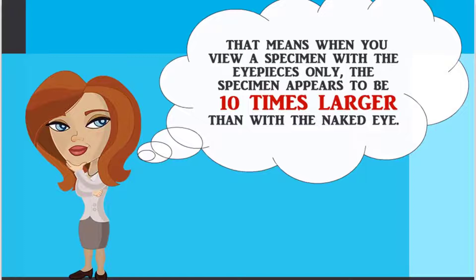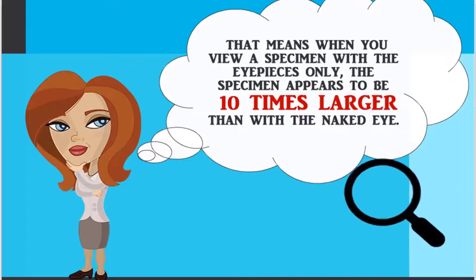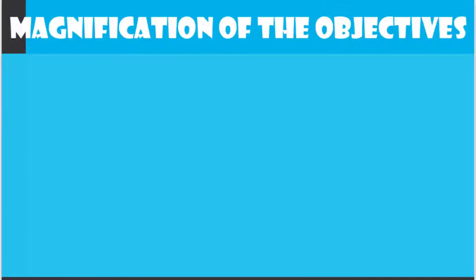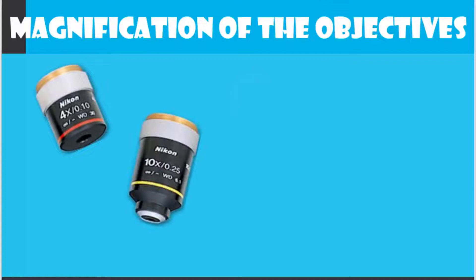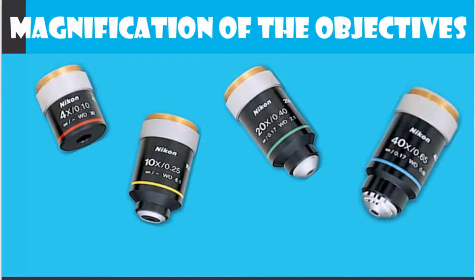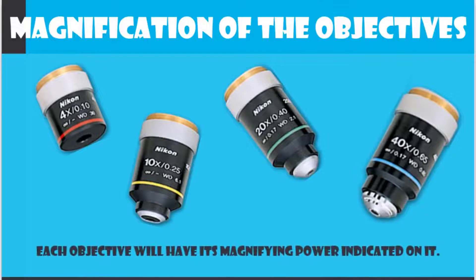That means when you view a specimen with the eyepieces only, the specimen appears to be 10 times larger than with the naked eye. In addition to the eyepieces, we must also consider the magnification of the objective used.